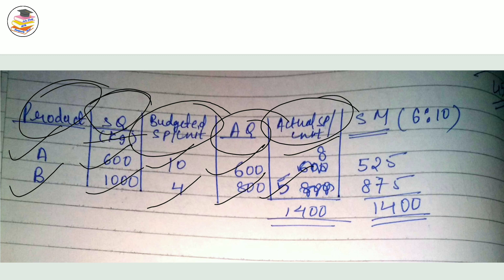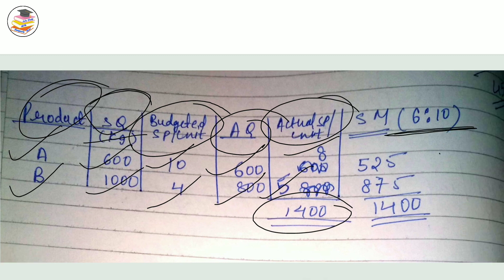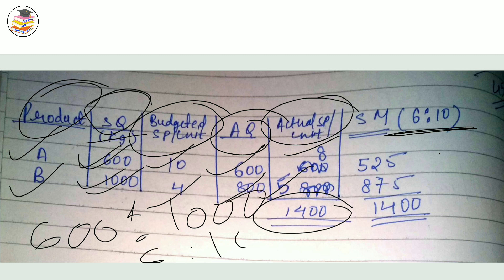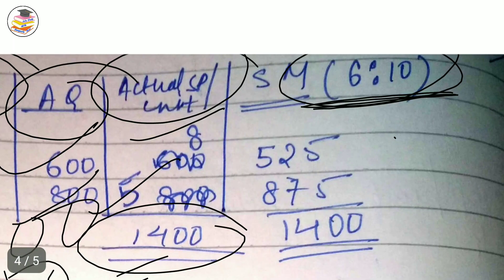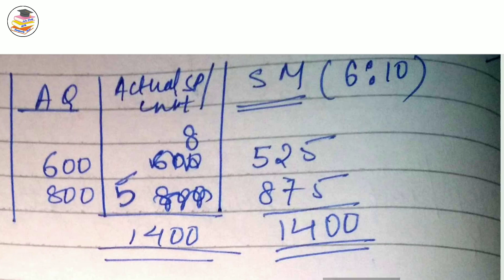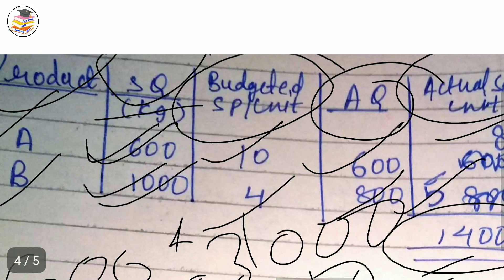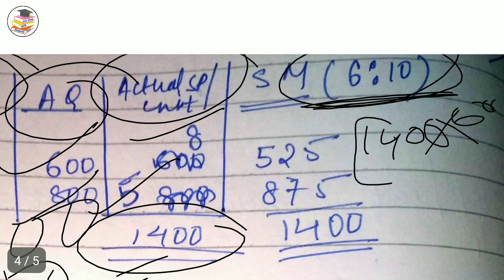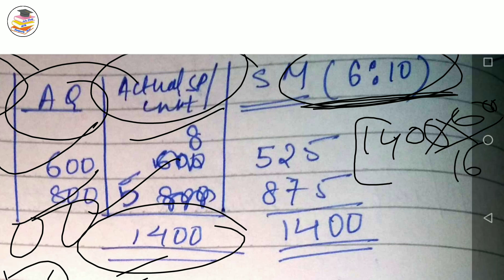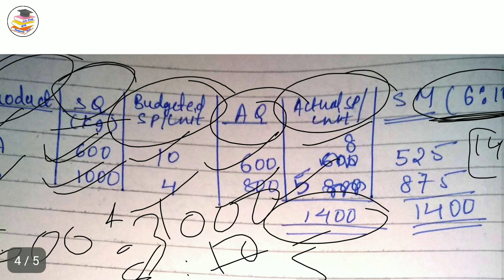First, make a table with all values. Then calculate the standard mix. Total budgeted quantity is 600 + 1000 = 1400. The ratio of 600 to 1000 simplifies to 3:5. Actual total quantity is 600 + 800 = 1400, so standard mix for Product A is 525 and for Product B is 875, and their sum is 1400.